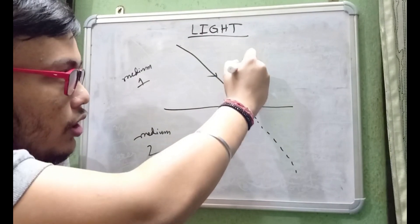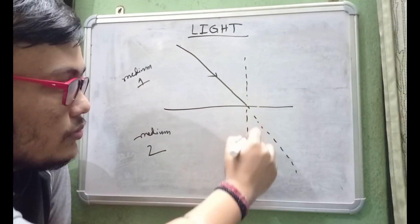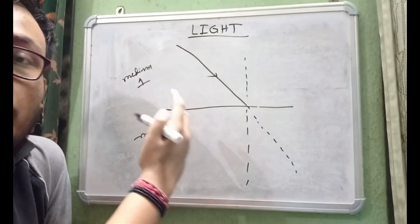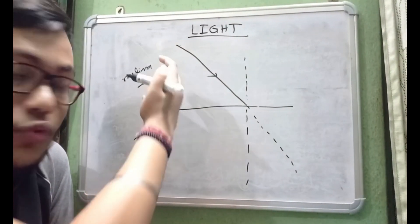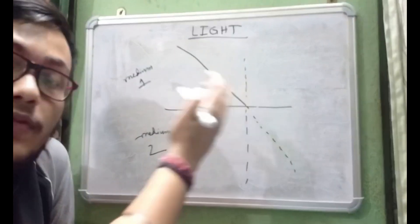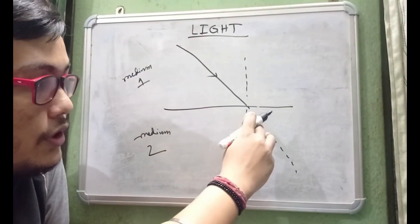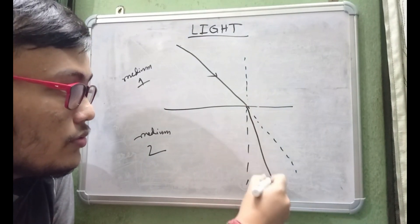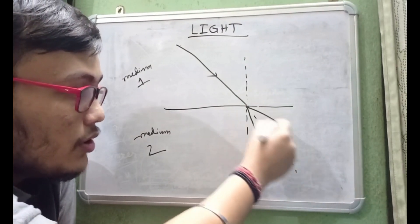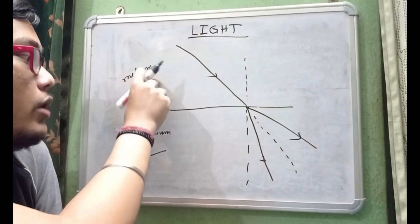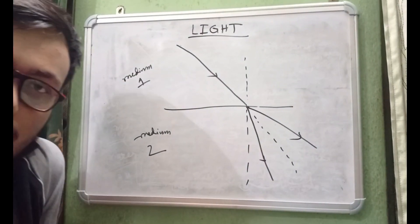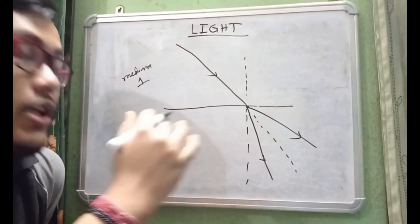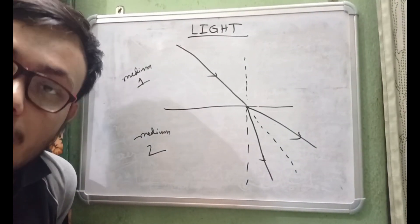Let's draw a normal first. It is observed that whenever light passes from one optical medium to another, the ray of light will bend — it will not follow its original path. It will bend either towards the normal or away from the normal, depending on the pair of two mediums in question. This bending of light is known as refraction of light.